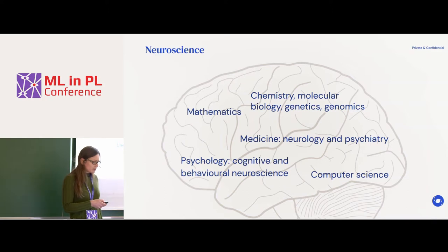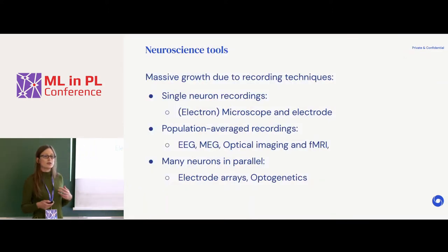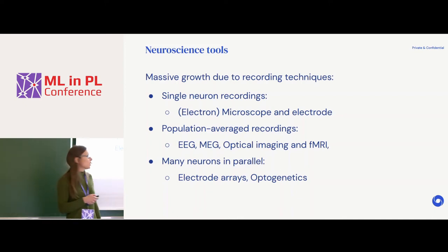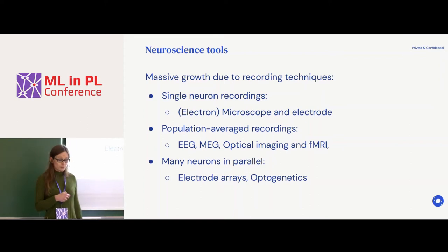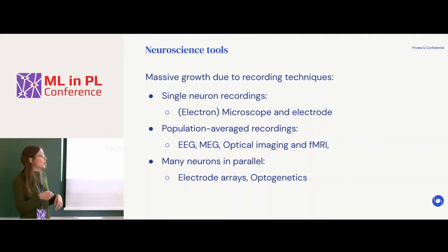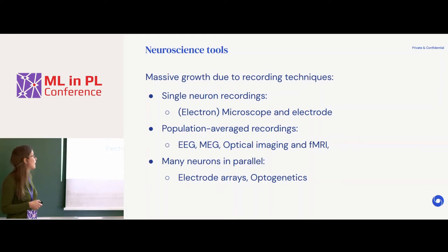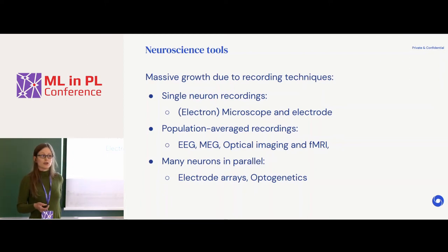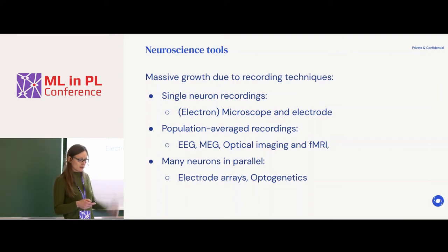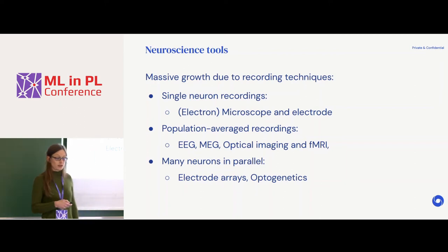A lot of different fields contribute to tackling how the brain works: chemistry, mathematics, medicine, computer science. But the ever-continuing growth of neuroscience is due to ever-improving recording techniques. We can now record not just from single neurons, but also less invasively from average signals of whole populations using EEG, MEG, optical imaging, and other functional imaging. Since recently, we can also record from neurons in parallel using thousands of very fine microelectrode arrays that get stuck directly into the brain.